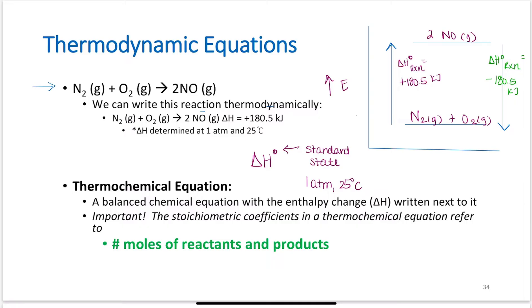So thermochemical equation. This includes the balanced chemical equation with the enthalpy change, delta H, written next to it. It is important to note the stoichiometric coefficients in a thermochemical equation refer to the number of moles of reactants and products. So this comes into play just like it has when we've done any stoichiometry so far. We have to keep these balanced values, these coefficients out in front, in our equations.